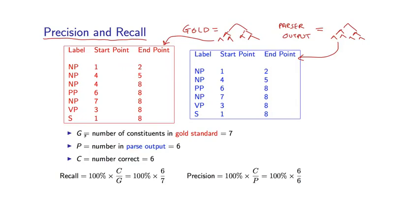We can define various numbers. G is the number of constituents in the gold standard tree — in this case, 7. P is the number of constituents in the parser output — in this case, 6. And C is the number of constituents that are actually correct — in this case, also 6. A constituent is correct if it also appears in the gold tree. Going through each one, they turn out to all be correct constituents.